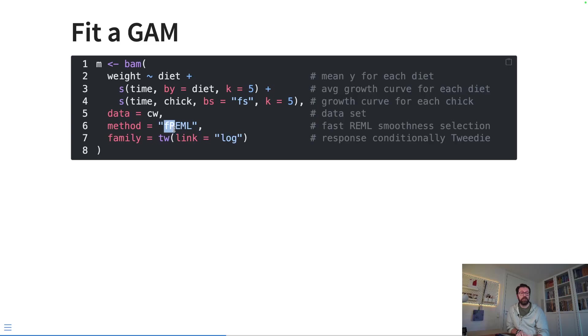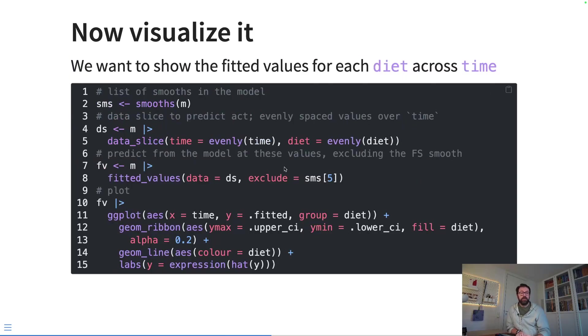Now because it fits a little bit slower, a little bit harder, so we're doing lots of estimating of smooths in here, we're going to use the fREML function, or the fREML smoothness selection, with the bam fitting function, for the big additive model.